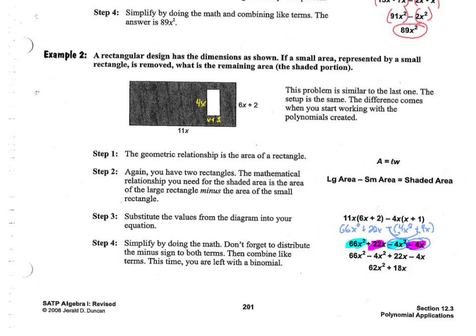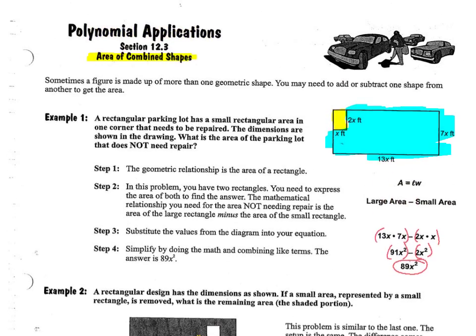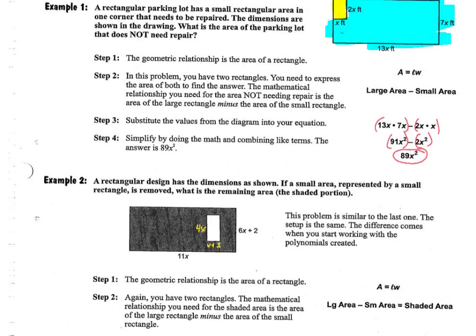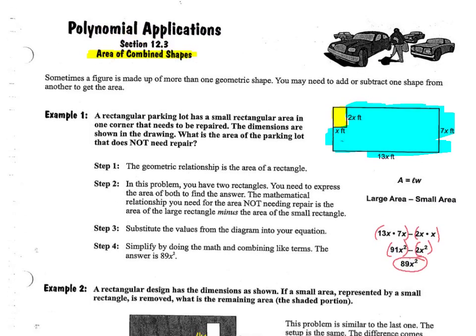And we get 62x squared plus 18x is our answer. And that's it for usually combining different types of rectangles. And you should be very comfortable remembering what the area of a rectangle, a square, a triangle, a trapezoid, and a circle are. And essentially these are the types of questions that you will be getting based on these types of polynomials and these types of shapes.